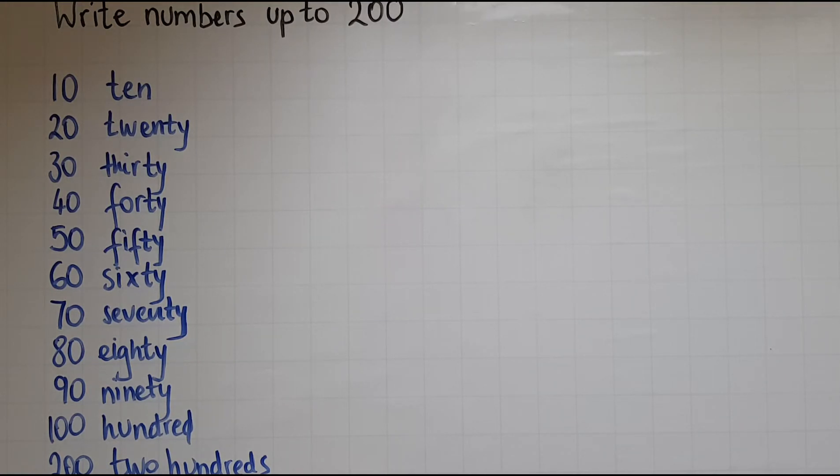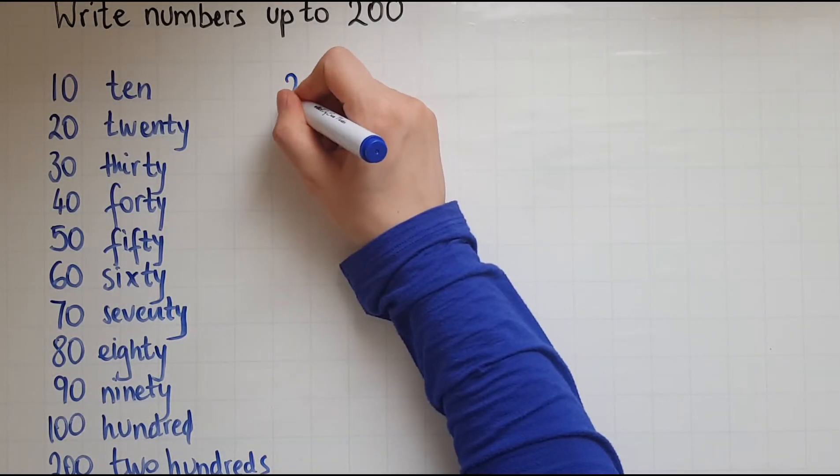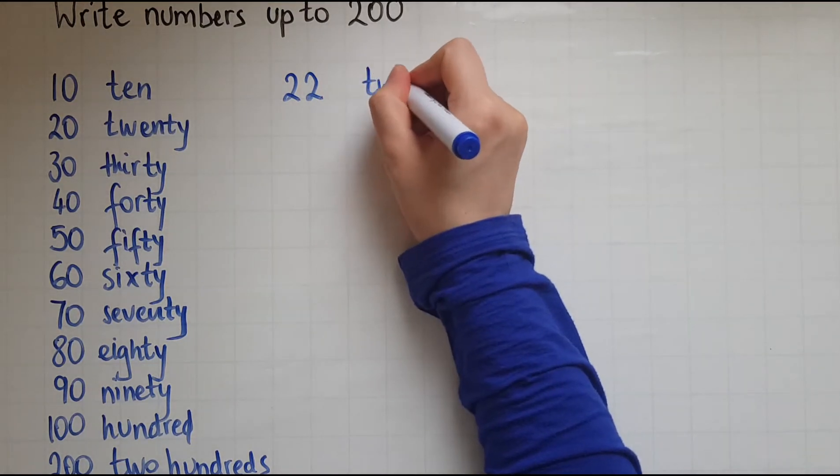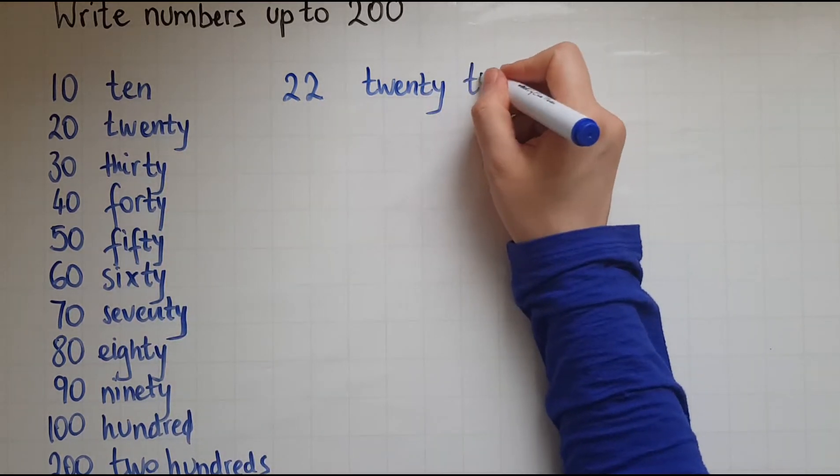Now, as we said before, you should know how to write numbers like 1, 2, 3, 4, 5 up to 20. So if you want to write 22, for example, you would write it as 22 in digits and in words. That would be just the 20 and the 2.